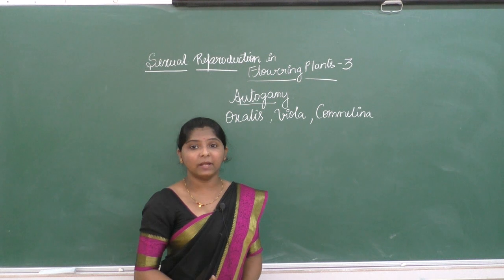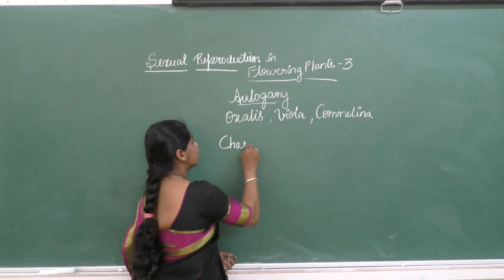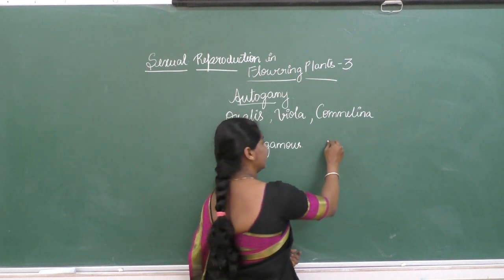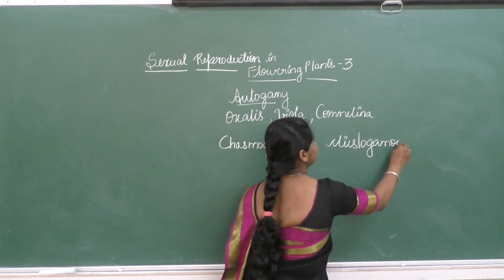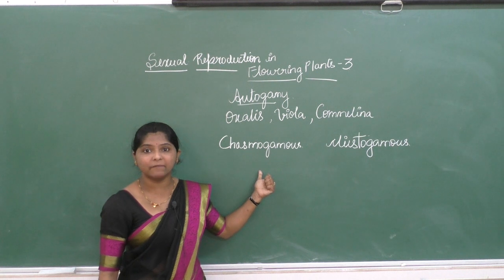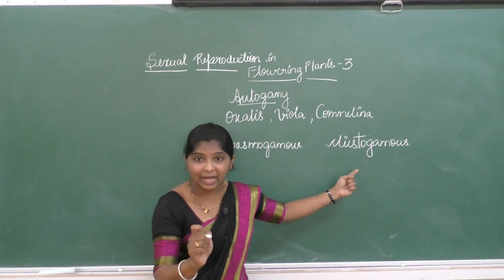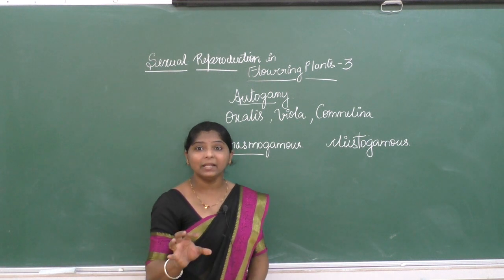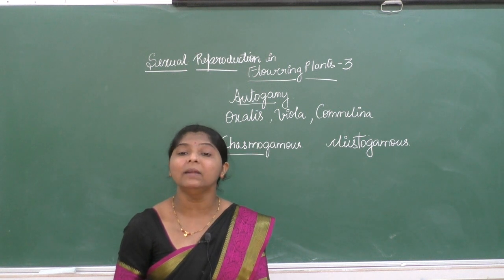These plants produce two types of flowers. One type is called chasmogamous flowers, and another type is called cleistogamous flowers. Please note this carefully.